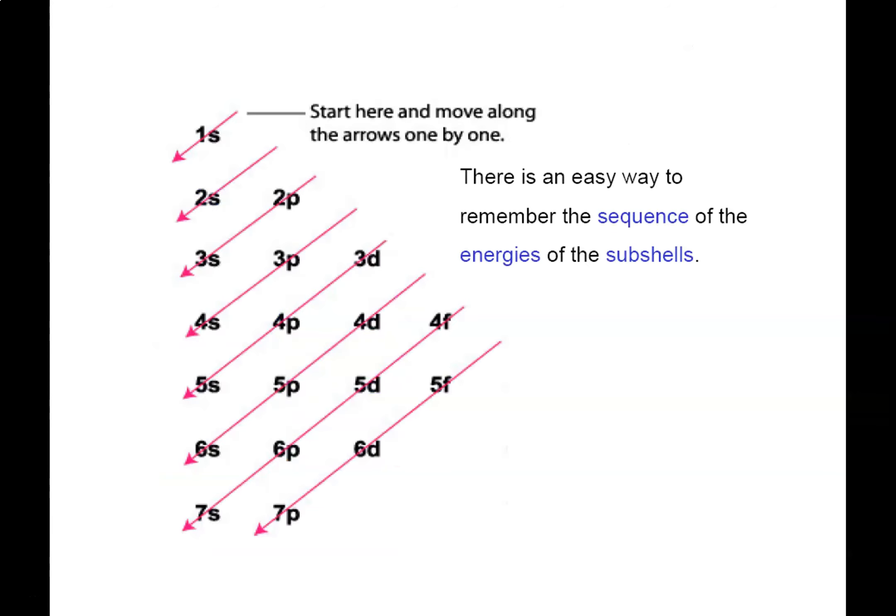Fortunately, there's a way of keeping track of all the weirdness that happens along the way through the use of what we call the Alf-Bow diagram. What you do is write 1S through 7S in the first column, then at row 2 you write 2P down to 7P, and then in row 3 you write 3D down to 7D. In row 4 you write 4F down to 7F, and that gives you the general layout.